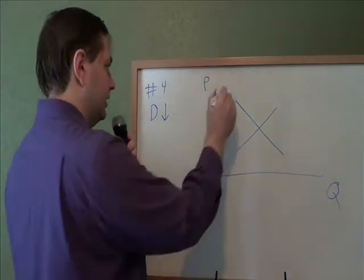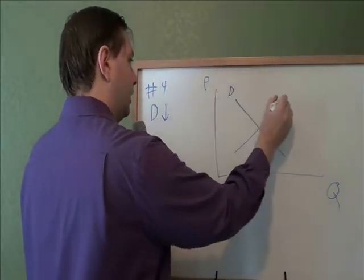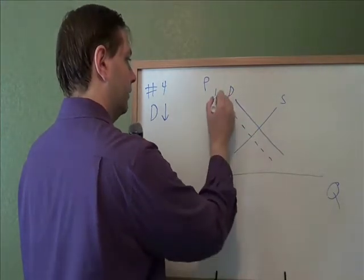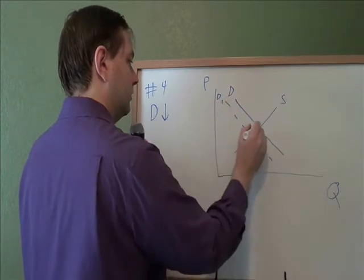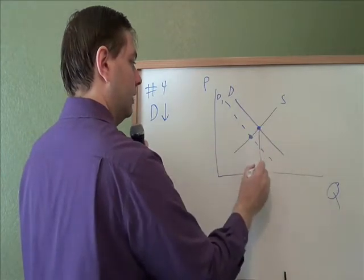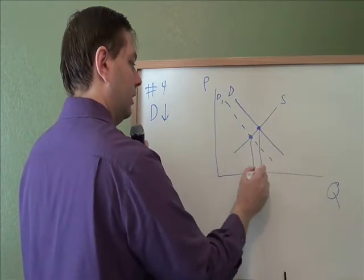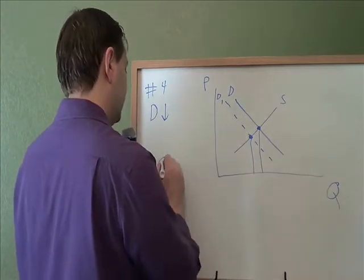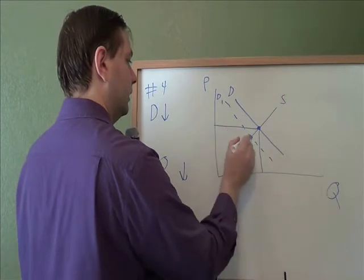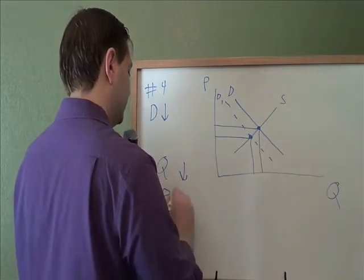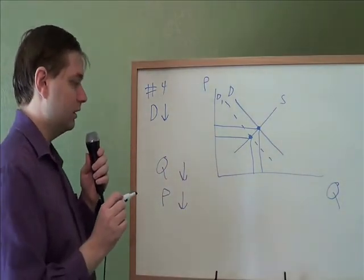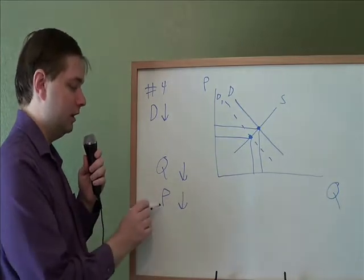Problem four: what happens when there is a decrease in demand? A decrease in demand will move the line to the left — here is the new demand curve. We've moved from equilibrium here to equilibrium there. That made quantity move to the left, so quantity decreased. The price has also gone down, so the price decreased. When there is a decrease in demand, that causes a decrease in both quantity and price.